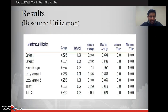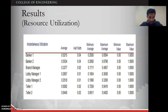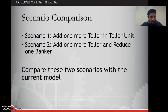Looking at resource utilization, the bankers are utilized almost 50 percent of the time, whereas the tellers are utilized up to 85 percent. We can see the gap between the other units, which are below 50 percent, and the teller unit, which is over 85 percent in resource utilization.